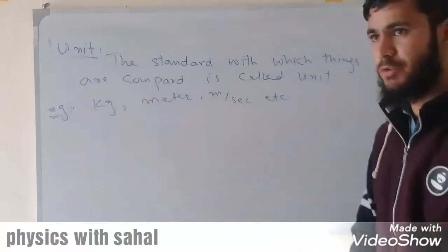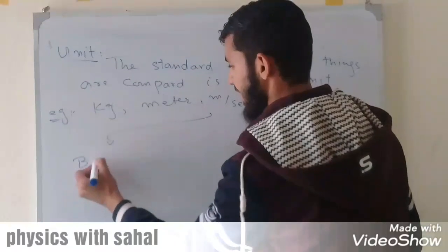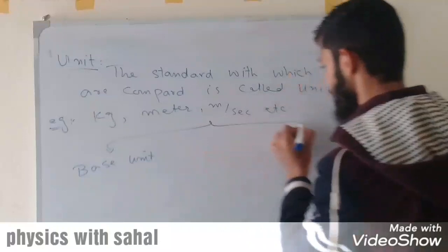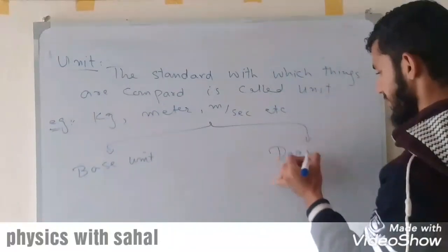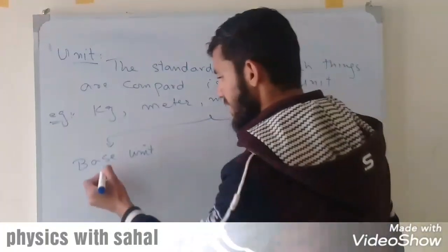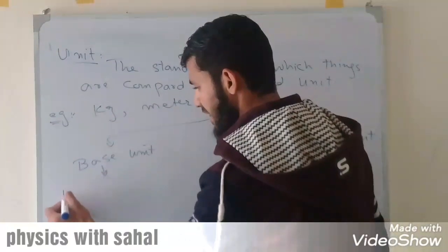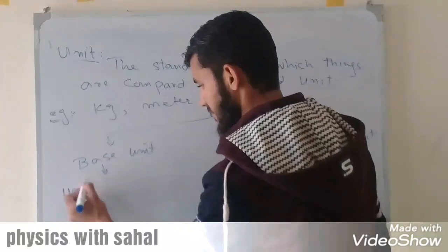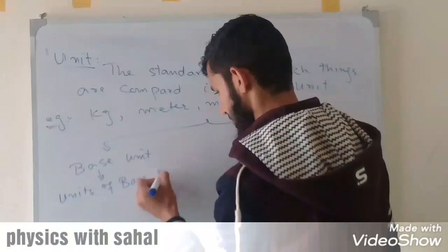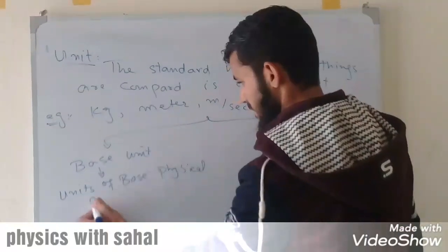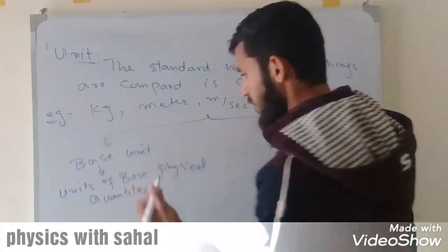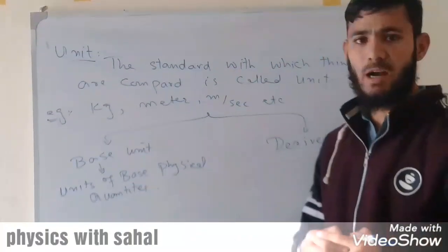There are two types of units: base units and derived units. Base units are the units of base physical quantities.